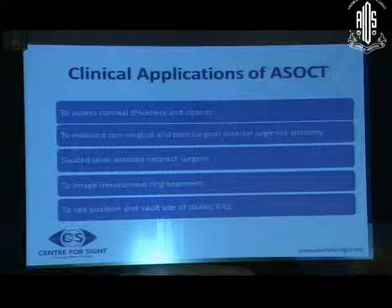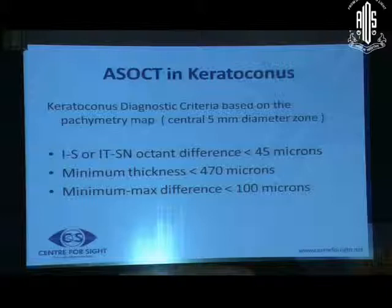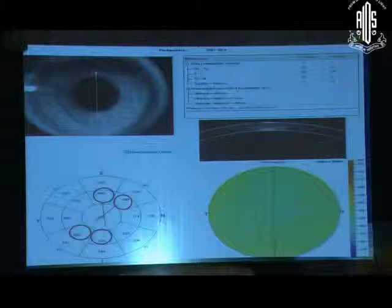Keratoconus can be diagnosed on anterior segment OCT based upon four parameters in the central 5 mm pachymetry zone. We look at the inferior-to-superior and inferotemporal-to-superior-nasal octant asymmetry. The minimal thickness should be less than 470 microns and the minimum-to-maximum difference should be less than 100 microns. This is how a normal cornea looks on anterior segment OCT, which also gives us progression pachymetry thickness maps.